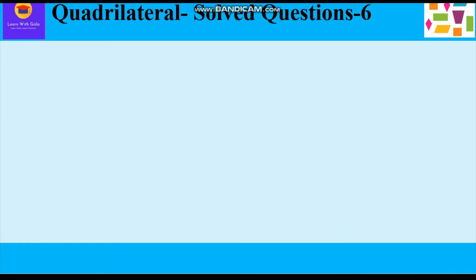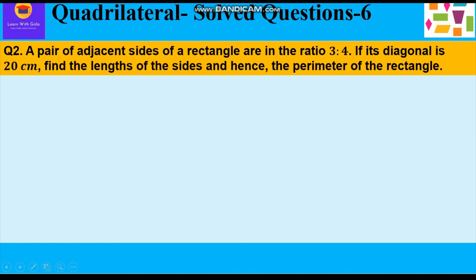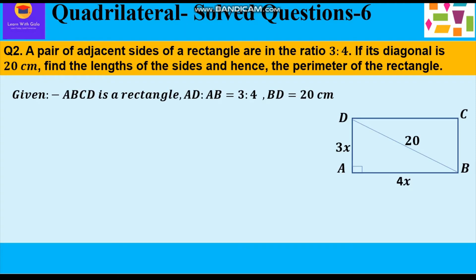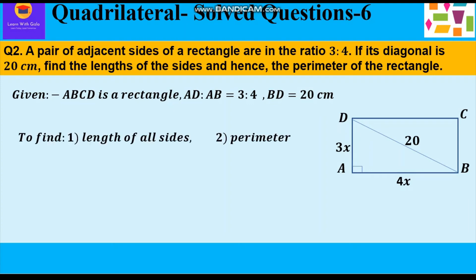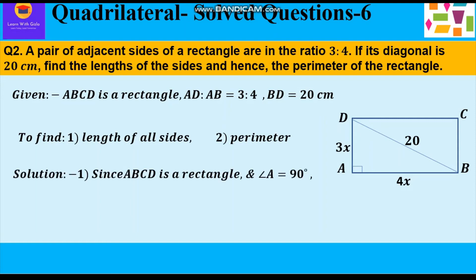Now the second question: a pair of adjacent sides of a rectangle are in the ratio 3 is to 4. If its diagonal is 20 cm, find the length of the sides and hence the perimeter of the rectangle. Given: ABCD is a rectangle in which adjacent sides AD to AB are in the ratio 3 is to 4, and diagonal BD = 20 cm. We have to find the length of all sides and the perimeter.